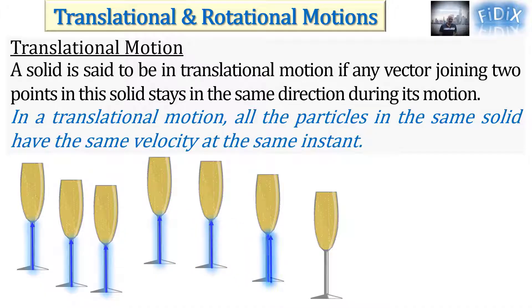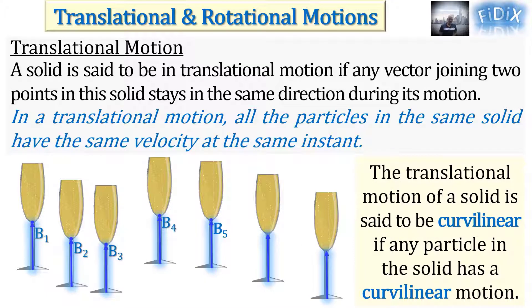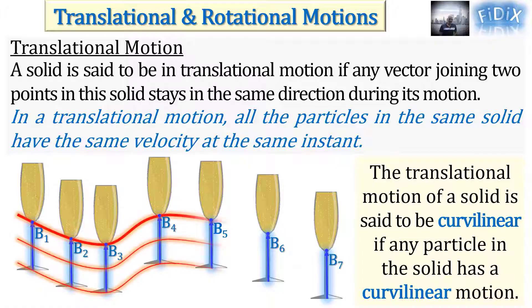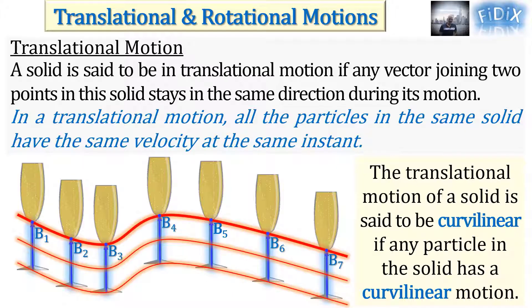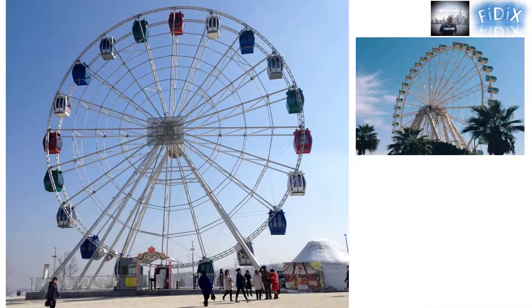The motion of the solid, which in this case is the glass, is an example of what we call curvilinear translational motion, since any particle in the solid has a curvilinear motion. The thickest red line represents the curvilinear trajectory of a particle B in the solid at seven different positions B1 to B7. The two other red lines also show the curvilinear trajectories of two other particles in the same solid.